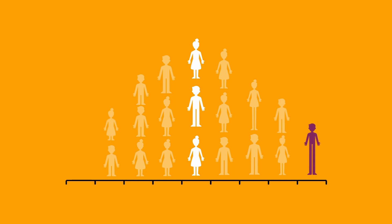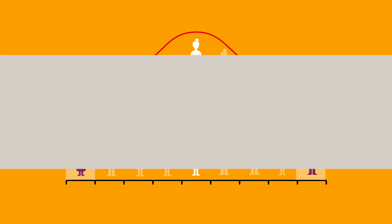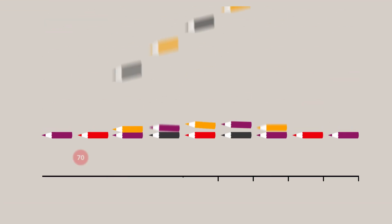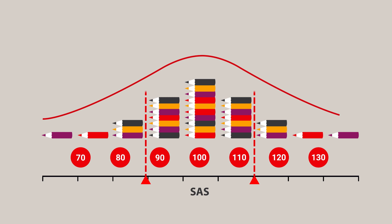Some people will be much taller, and others much shorter. They'll be included on either end of the curve. Like with heights, those with a SAS of 89 to 111 are within the average range, along with the majority of learners.